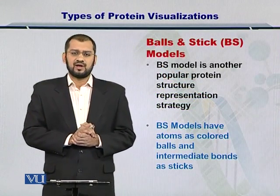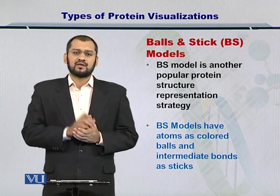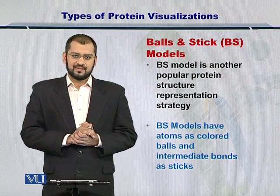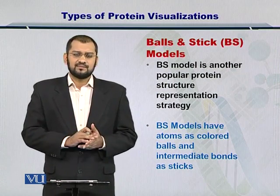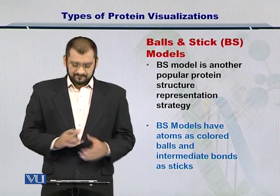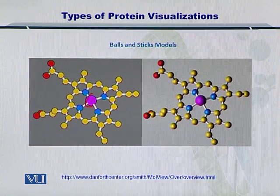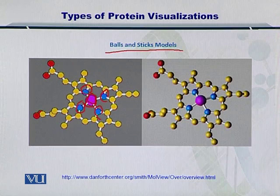There is also the balls and sticks model, in which atoms are plotted as balls and the sticks represent the relationships or bonding between them. In the balls and sticks model, the atoms can be colored according to the type of atom, making it very interesting to visualize. Here you can see carbon and different atoms surrounding it. This model is pretty common, and people use it to visualize proteins especially when they are interested in the distances between atoms and the bonds between them.